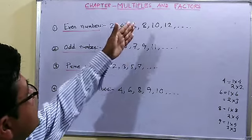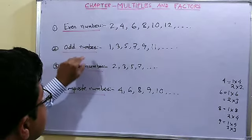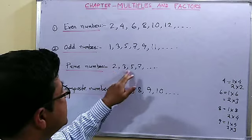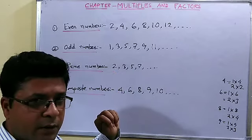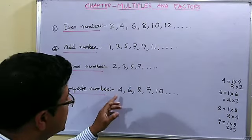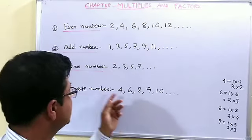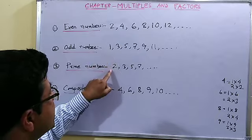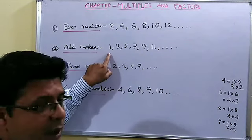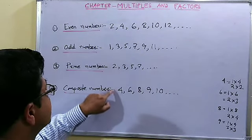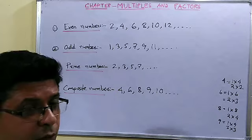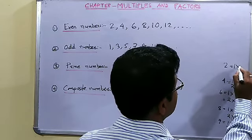So these are the 4 different types of numbers we have to study in class 5. Even numbers are the multiples of 2. Odd numbers are the non-multiples of 2. Prime numbers — like 2, 3, 5, 7 — have only 2 factors: 1 and the number itself. Composite numbers have more than 2 factors. Important points: 1 is not a prime number, 1 is an odd number. And 2 is an even number but it is also a prime number because 2 has only 2 factors: 1 and 2.